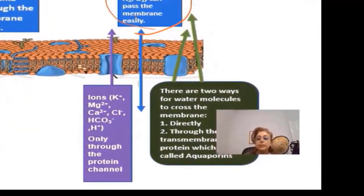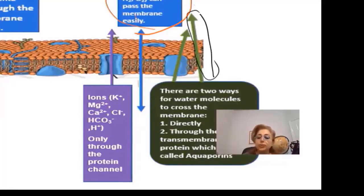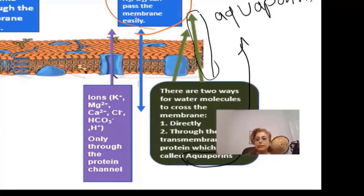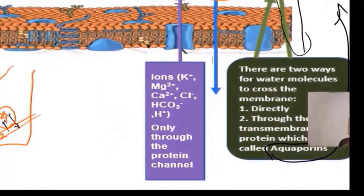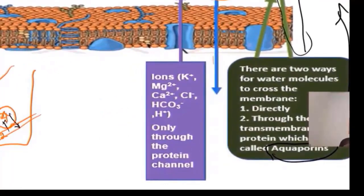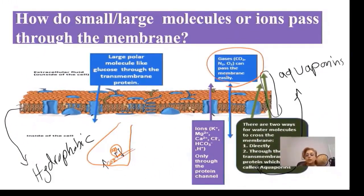For water molecules, there are two ways they can cross the membrane: they can go directly through the membrane, or they can go through plasma membrane proteins called aquaporins. For ions — anything that has a charge — they cannot go through the membrane directly because in the middle of the membrane you have a hydrophobic layer. Thankfully, we have some proteins that allow these ions to go through the membrane via protein channels.